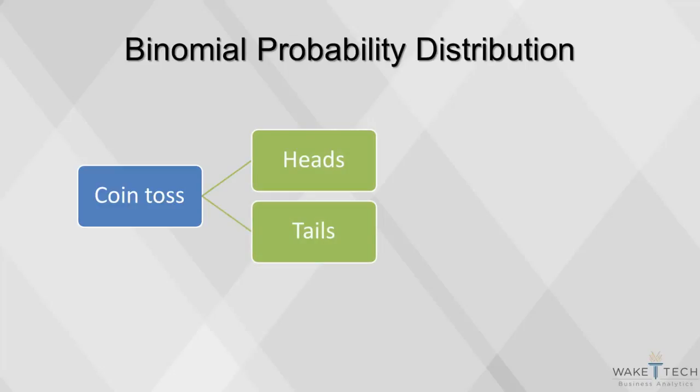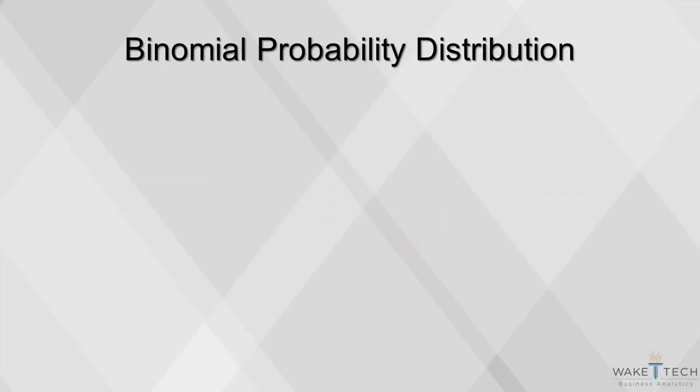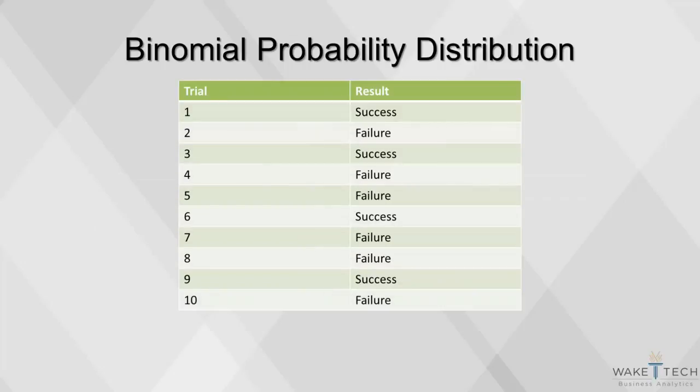The probability of either observation, heads or tails, is the same each time we toss the coin. These outcomes are generally called success and failure. The probability of success is p, and the probability of failure is 1 minus p. The distribution maps the outcome of all the trials. Each trial has to be independent, and the probability of success has to be the same for each trial.